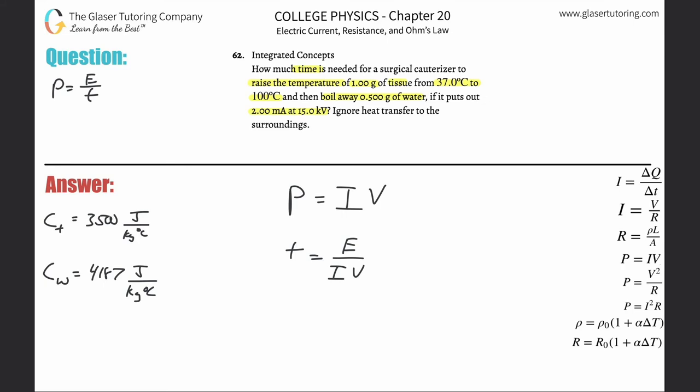So in order to find the time I need to know the energy supplied. The energy that's being supplied to do what? Well, to raise one gram of tissue from 37 to 100, and that sounds like an addition, and boil away 0.5 grams of water. So I realize that this energy up here is really going to be the sum of two different energies: the energy that's going to be needed to raise the temperature of the tissue, plus then the energy that's going to be needed to vaporize, boil away the water.